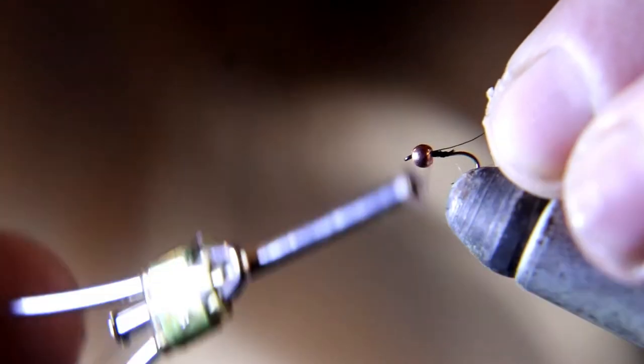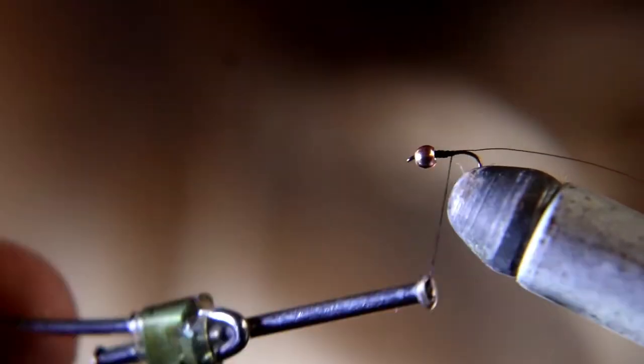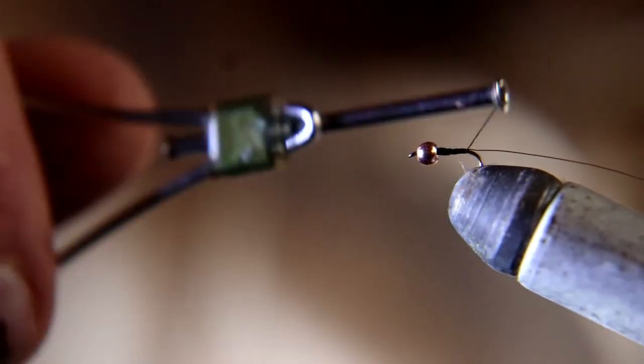Now we're going to tie in a fine gold wire. We're using fine gold wire and a gold bead instead of silver. I just find I have more luck with a gold bead and gold wire than I do a silver bead and silver wire, so we're going to use gold in this fly.